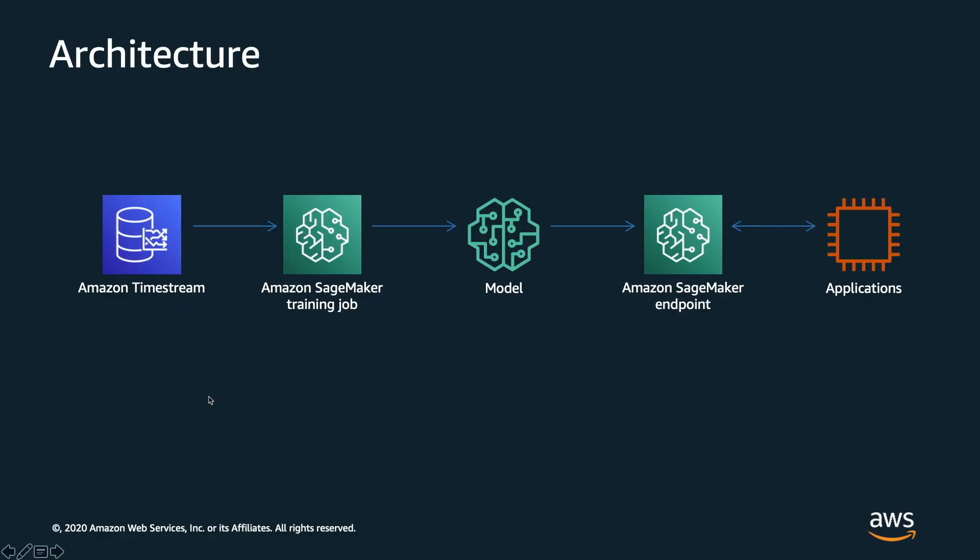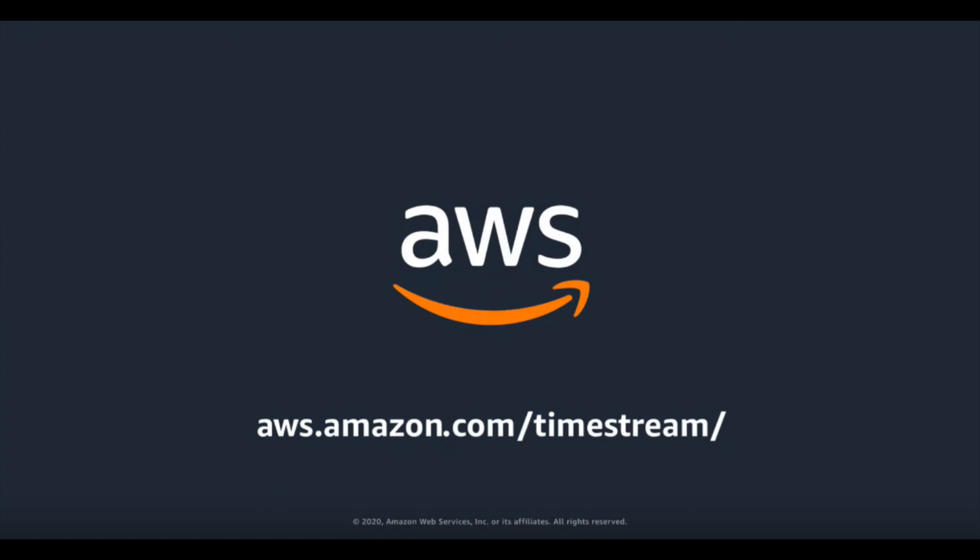Recapping what we did in this exercise: we generated sample data and stored it in a Timestream database, we launched a SageMaker training job using Timestream to create a model, then we deployed an endpoint using our model so that anomaly scores could be calculated on new data points. Thank you for watching. To learn more about AWS and Amazon Timestream, please visit the Amazon Timestream website. Bye-bye.